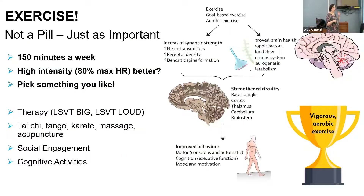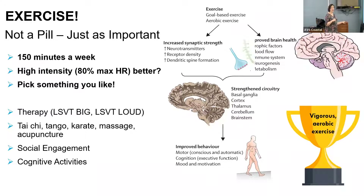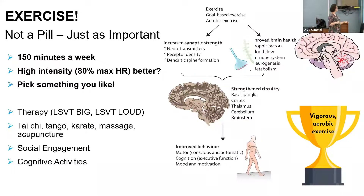Exercise is extremely important in Parkinson's disease — almost as important as medication, because we think it can actually slow down progression. The type that's most beneficial is probably high-intensity aerobic exercise: getting your heart rate up to 80% of maximum, keeping it there for about 20 minutes, five times a week. The best exercise is something you will actually do — if you hate it, you're not going to do it. So pick something you enjoy.